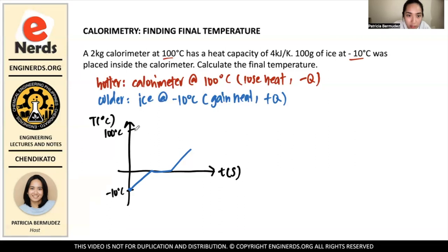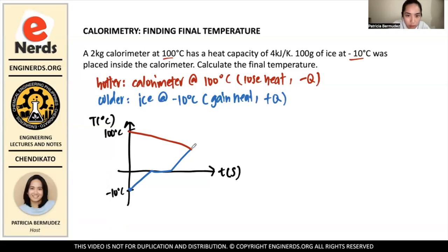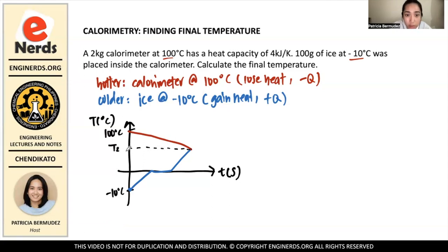The calorimeter will lose heat and reach a point of thermal equilibrium — that is T2, which is the same final temperature for both the calorimeter and the ice.